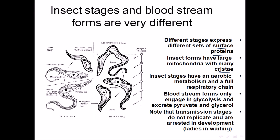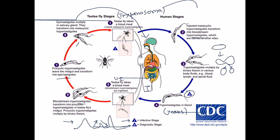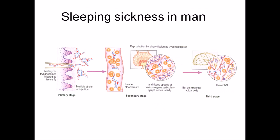Transmission stages do not replicate and are arrested in development. Until they encounter the appropriate host, they won't replicate. Transmission stages refer to when trypanosomes are moving from the tsetse fly to the human host or from the human back to the tsetse fly.